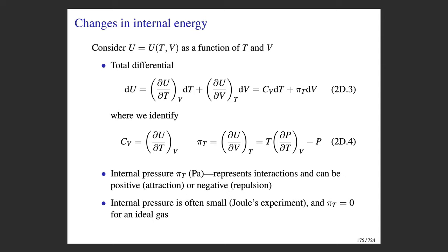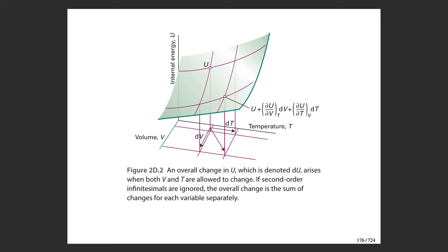These are the independent variables; the internal energy is the dependent variable. You change temperature — that's going to change U. You change volume — that's going to change U. The total differential is expressed as dU = (∂U/∂T)_V dT + (∂U/∂V)_T dV. There's a pattern: the total differential of the dependent variable equals the differentials of the independent variables each multiplied by a partial derivative slope — one telling us how U changes with temperature at constant volume, and the other how U changes with volume at constant temperature.